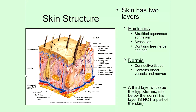One thing we do see in the epidermis is free nerve endings. That's why you can sense things on your skin — you can sense changes in temperature and those kinds of things — because you do have nerve endings that extend up into the epidermis.